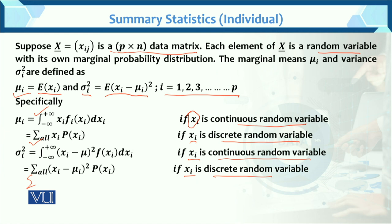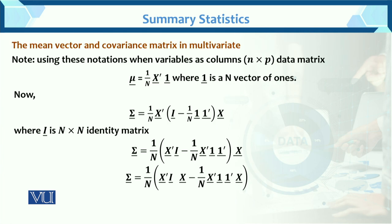All these notations will be used in further analysis. The purpose here is that in summary statistics, you understand the notations — how to find the mean, variance, and covariance, and what their notations are. Now, the mean vector and the covariance matrix in multivariate analysis.